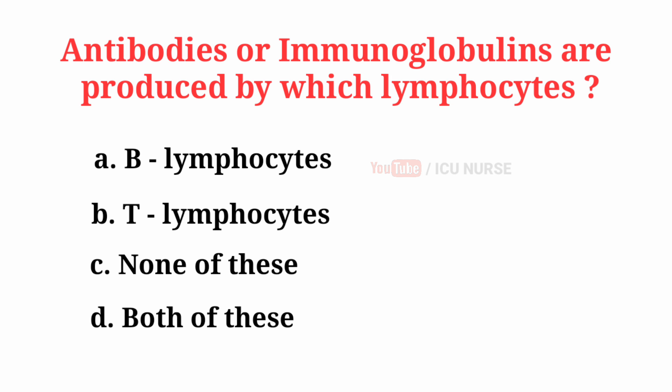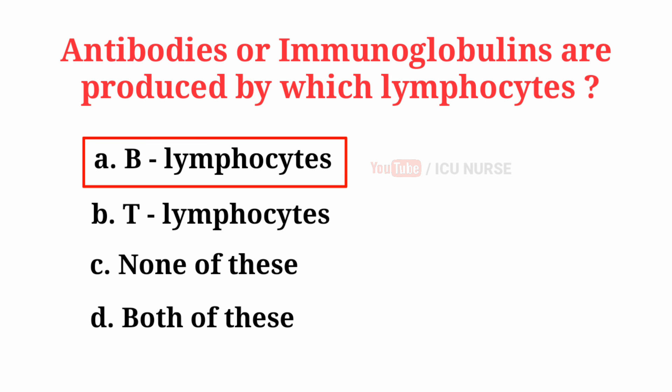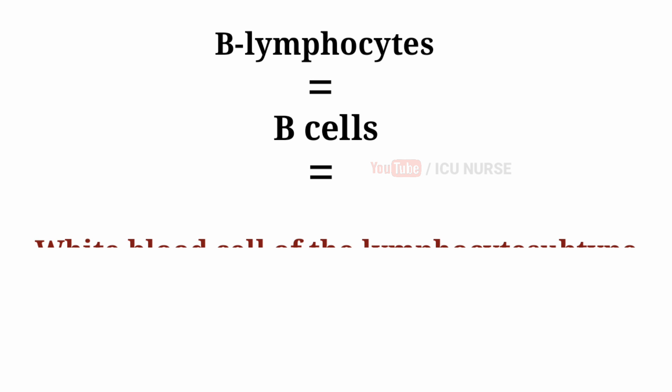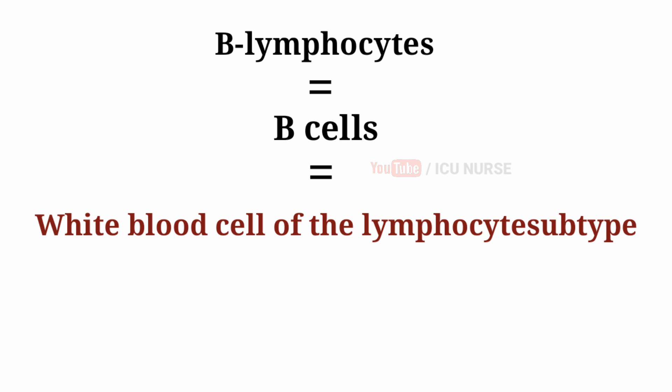Antibodies or immunoglobulins are produced by which lymphocytes? The correct answer is A, B-lymphocytes. B-lymphocytes are also known as B-cells. B-lymphocytes are a type of white blood cell of the lymphocyte subtype.